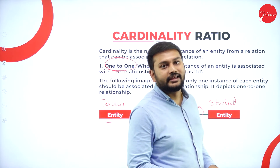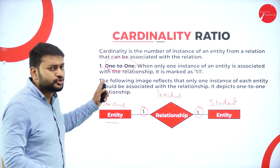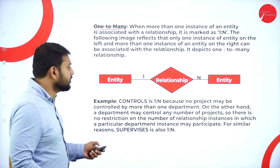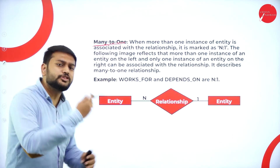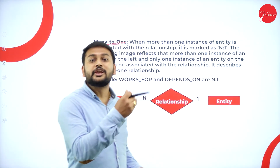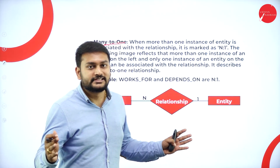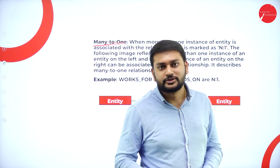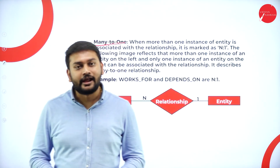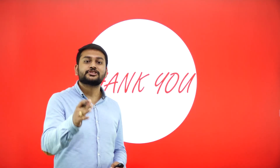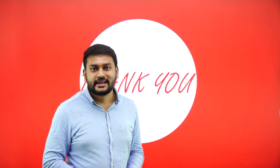You understood one-to-one, one-to-many, and many-to-one. Can we also have many-to-many? Of course — many teachers can teach many students. So that gives us four types of cardinality ratios in total. With this, I've come to the end of this session. In the next session, I will discuss participation. Till then, take care — bye bye!